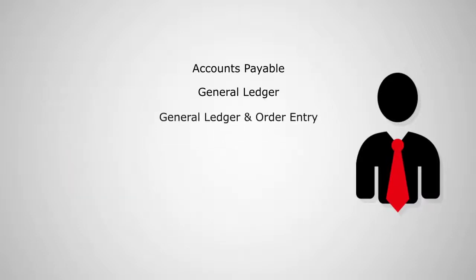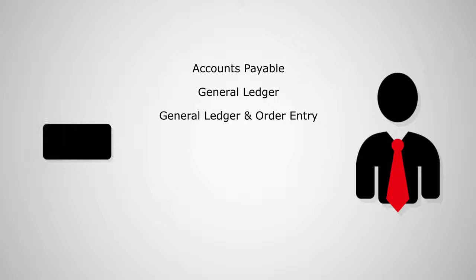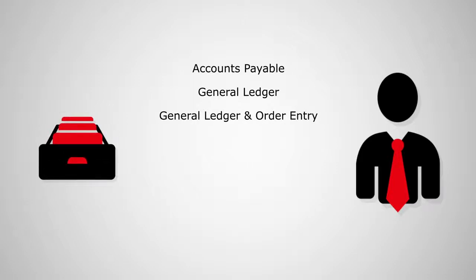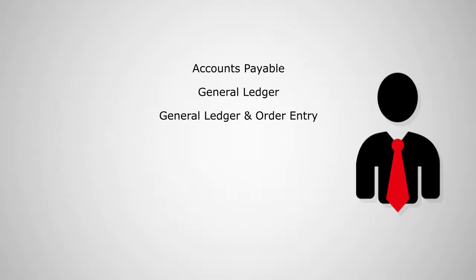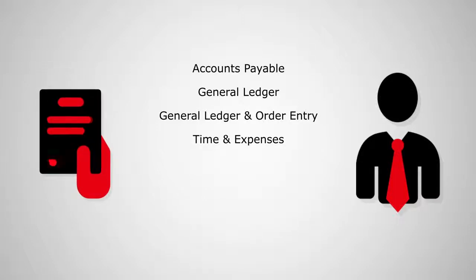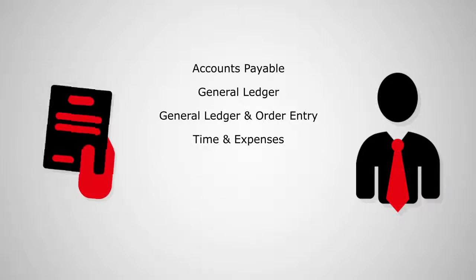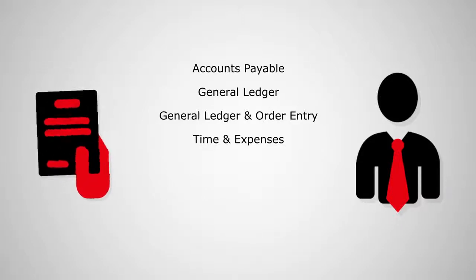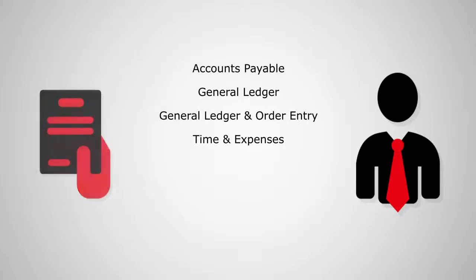General Ledger and Order Entry, an option chosen if the expenses were already paid in Concur. Time and Expenses, another option to choose if billable expenses need to be rebilled to the customer.